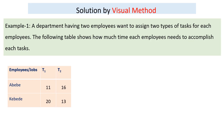Before moving directly to the enumeration method, let's take a simple example — a 2×2 matrix — and solve it with a visual method. A department having two employees wants to assign two types of tasks to each employee. The following table shows how much time each employee needs to accomplish each task.